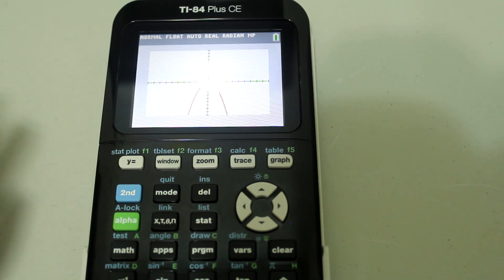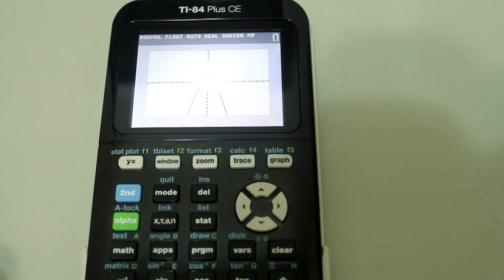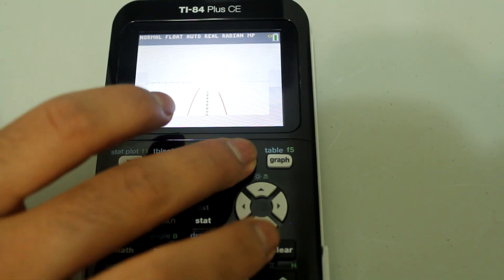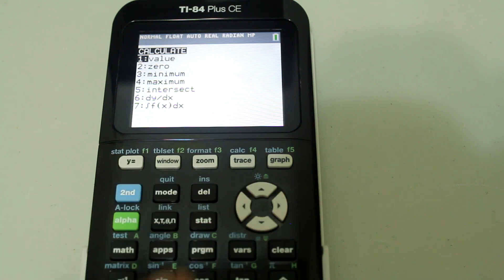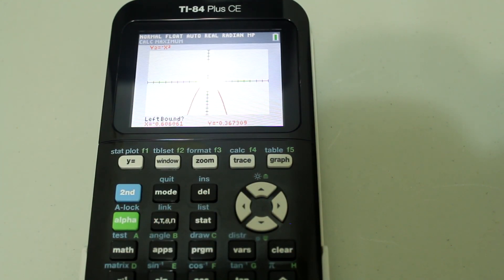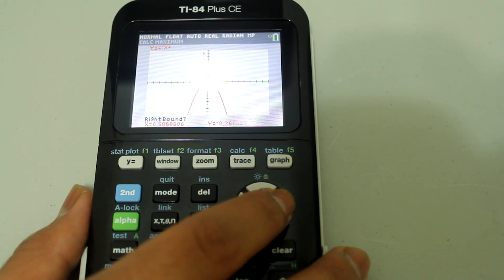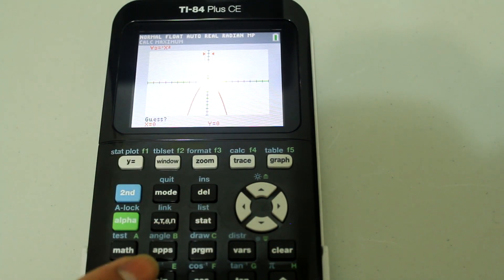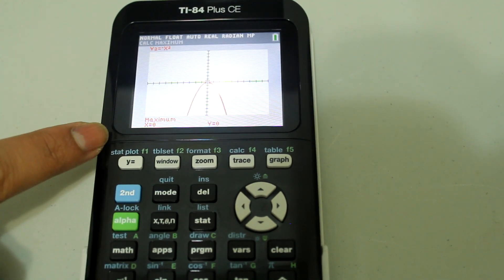Now if I wanted to find the maximum, I follow almost the same procedure I followed for the previous graph where I found the minimum. So second trace, hit number 4 and then I go to the left of it a little bit, then go to the right a little bit, and then guess, and the maximum is at 0, 0.